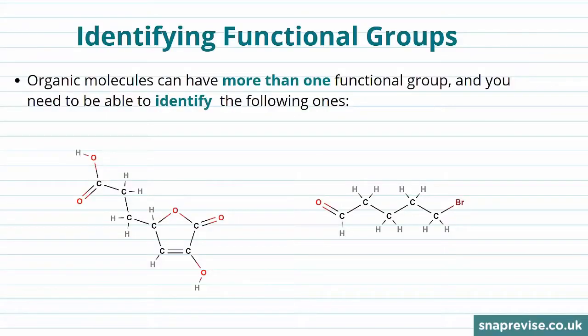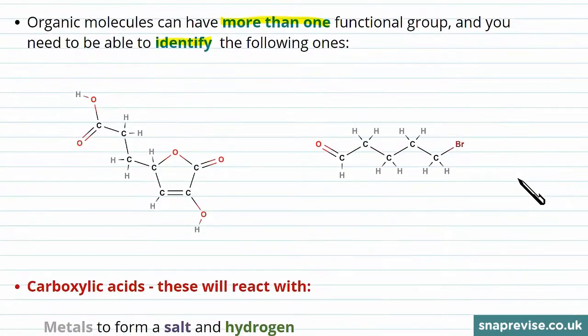To be able to think about how to make a molecule, which we call synthesis, you need to know what functional groups it contains. Organic molecules often contain more than one functional group, so we need to be able to identify a range of these.